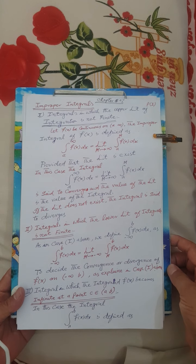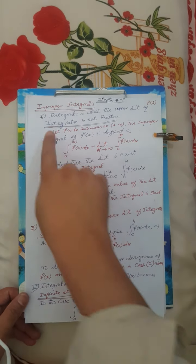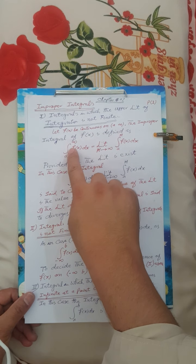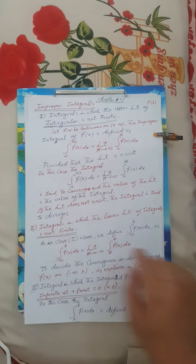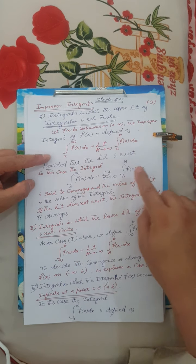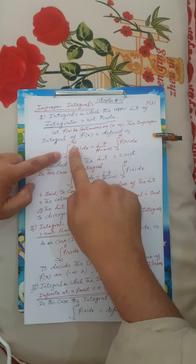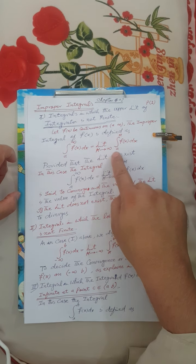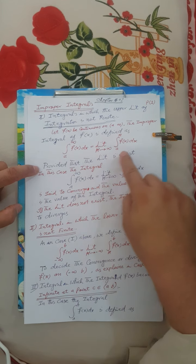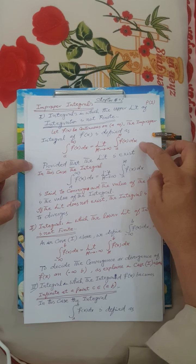Our next topic is improper integrals — integrals in which the upper limit of integration is not finite. If the function f(x) is continuous on the interval [a, ∞), then the improper integral of f(x) on that interval is equal to the limit as m tends to infinity of the integral from a to m of f(x) dx, provided that this limit exists.